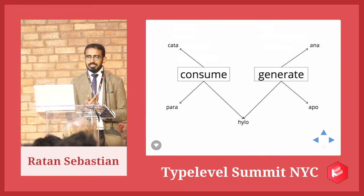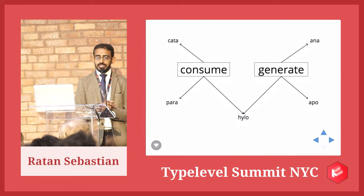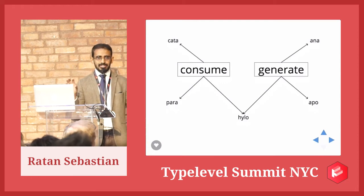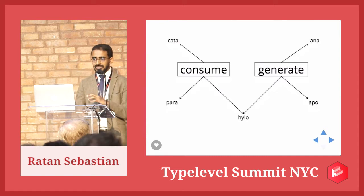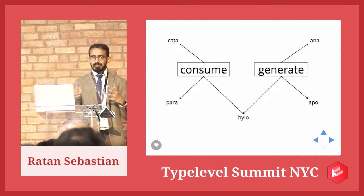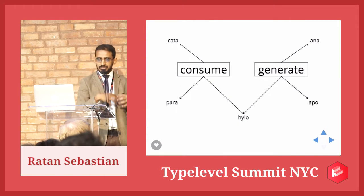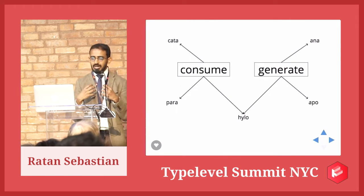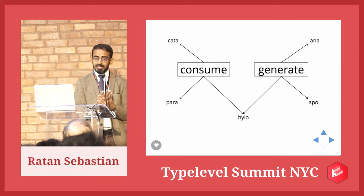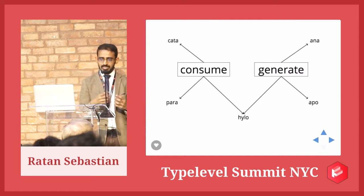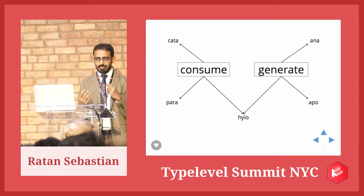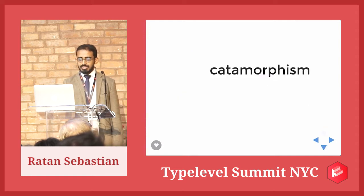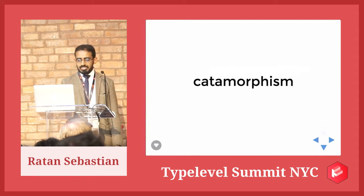Recursion schemes are kind of like machines that, given some parameters, will give you a program that traverses your data structure in a certain way. The kinds of recursion schemes we'll be talking about today broadly fall into categories of schemes that consume data structures and ones that generate them. Cata and Para are examples that consume a data structure; Ana and Apo generate them; and Hilo is a mix of both.